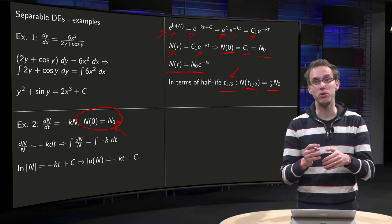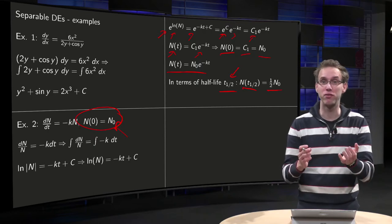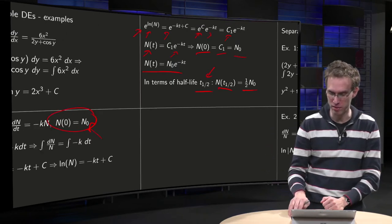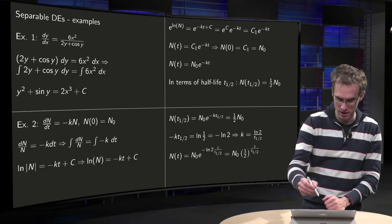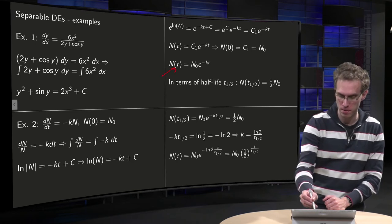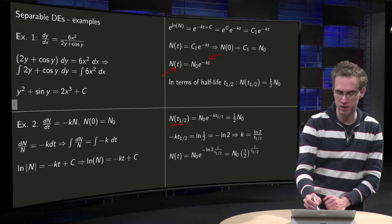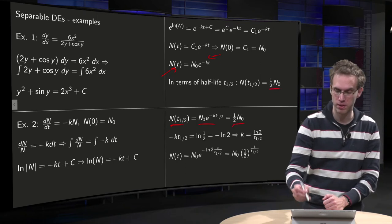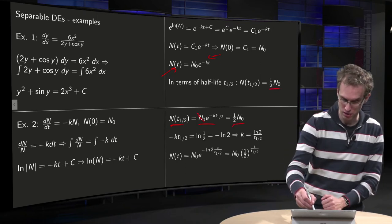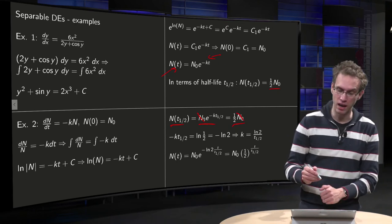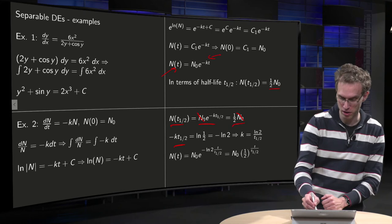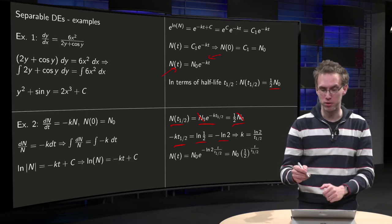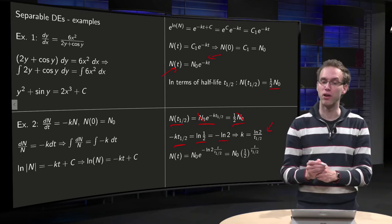I can use this t half in order to eliminate k in favor of the t half. This t half means something physically. So how can we do that? Well, we plug t half in our formula. So we get nt half equals n0 times e to the power minus kt half equals one half n0. You see the n0's cancel out. We can take the ln left and right. So we get minus k times t half equals ln of one half equals minus ln of two. So we can solve for k in terms of t half. So k equals ln of two over t half.